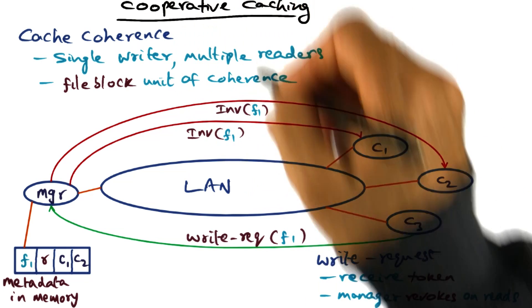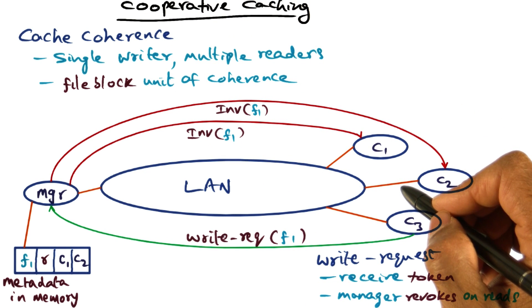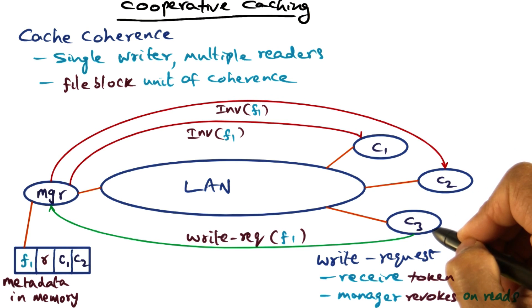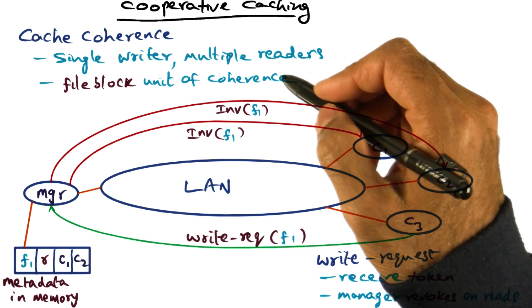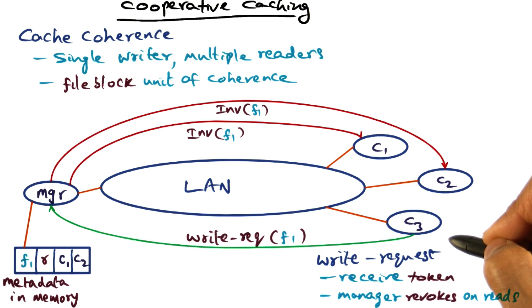And that is what cooperative caching is all about, where instead of going to the disk to retrieve the file, we can actually get the file content from the cache of one of the clients that happens to have a copy of the file.